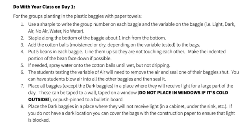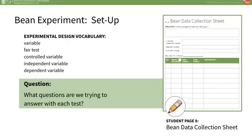Define and discuss variables and fair tests with students. For differentiation, you could have students design their own investigations based on the Engage question. You will walk students through the setup on Teacher Pages 6 and 7. Be sure to discuss as a class why the groups are doing different tests. Facilitate a discussion by asking, what questions are we trying to answer with each test? If students need guidance, you can prompt them by asking, do plants need air to grow? Water? Light?